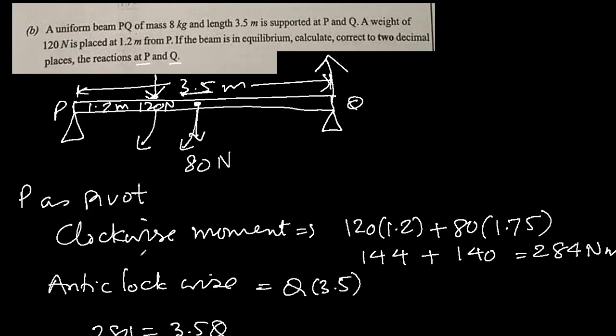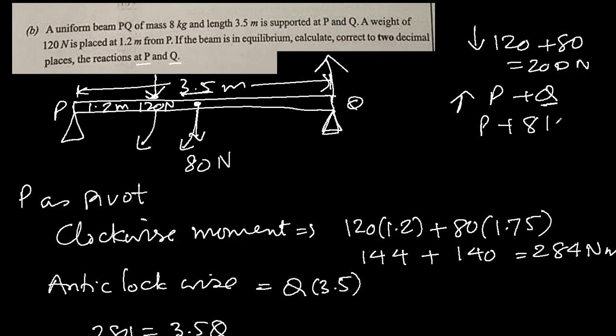What about P? We can repeat the similar process by taking Q as pivot, but there's an easier way. We know that downward forces are 120 newtons and 80 newtons, which is 200 newtons. Upward forces are P and Q. Q is known to us now, so for equilibrium: P plus 81.14 equals 200. P is 200 minus 81.14, which equals 118.86 newtons.